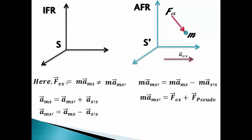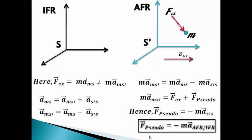So our correcting factor final equation can be written as M·A(MS') equals F'_external plus F'_pseudo. Hence, pseudo force equals minus M·A(S'S). In general, we can say that pseudo force is the force acting in the opposite direction, having the magnitude of the acceleration of the accelerated frame of reference (AFR) with respect to the inertial frame of reference (IFR).